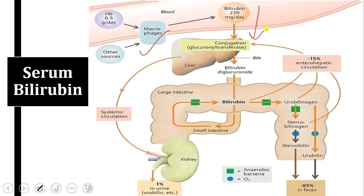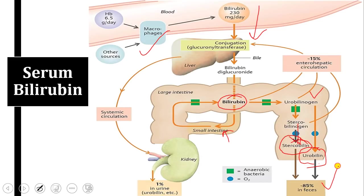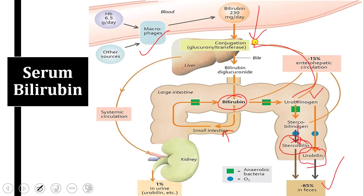Conjugated bilirubin is excreted to the small intestine, then converted to urobilinogen in the large intestine by anaerobic bacteria. Urobilinogen is further converted to stercobilinogen and then to stercobilin (responsible for normal stool color) and urobilin (responsible for normal urine color). Part of urobilinogen undergoes enterohepatic circulation — re-enters the liver, passes into systemic circulation, goes to the kidney, and is excreted in urine.